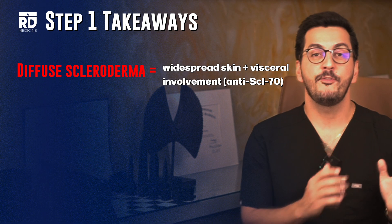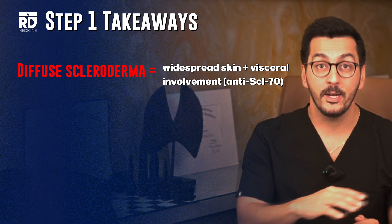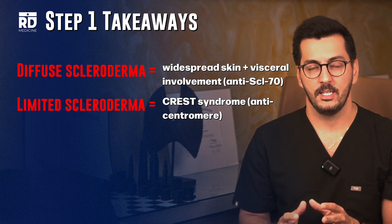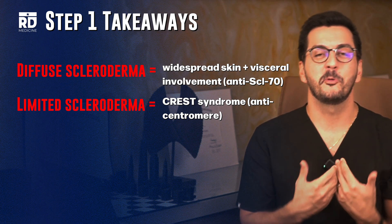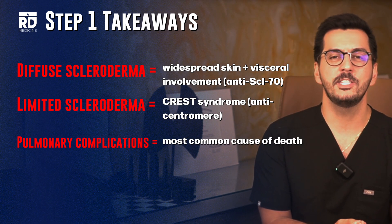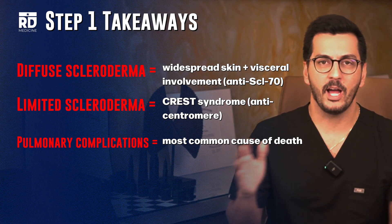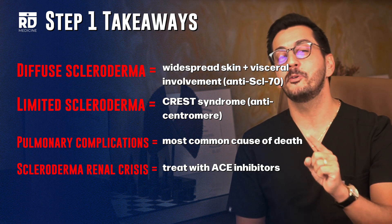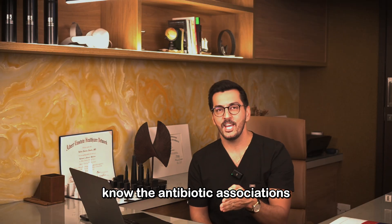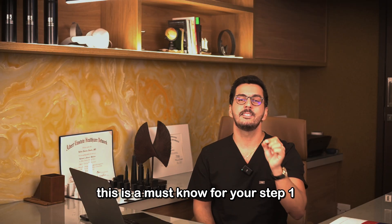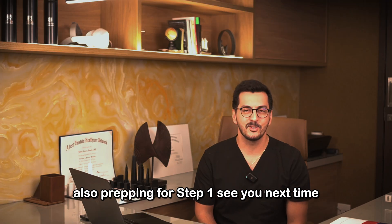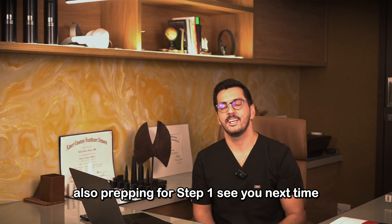Step 1 takeaways: diffuse scleroderma has widespread skin and visceral involvement with anti-Scl-70; limited scleroderma is CREST syndrome with anti-centromere antibody. Pulmonary complications are the most common cause of death. Scleroderma renal crisis is treated with ACE inhibitors. Know the antibody associations and organ complications — this is a must-know for Step 1.